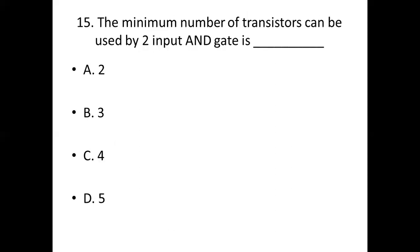15th bit: The minimum number of transistors that can be used by a two-input AND gate is dash. Option A: 2. Option B: 3. Option C: 4. Option D: 5. Answer: Option A, 2.